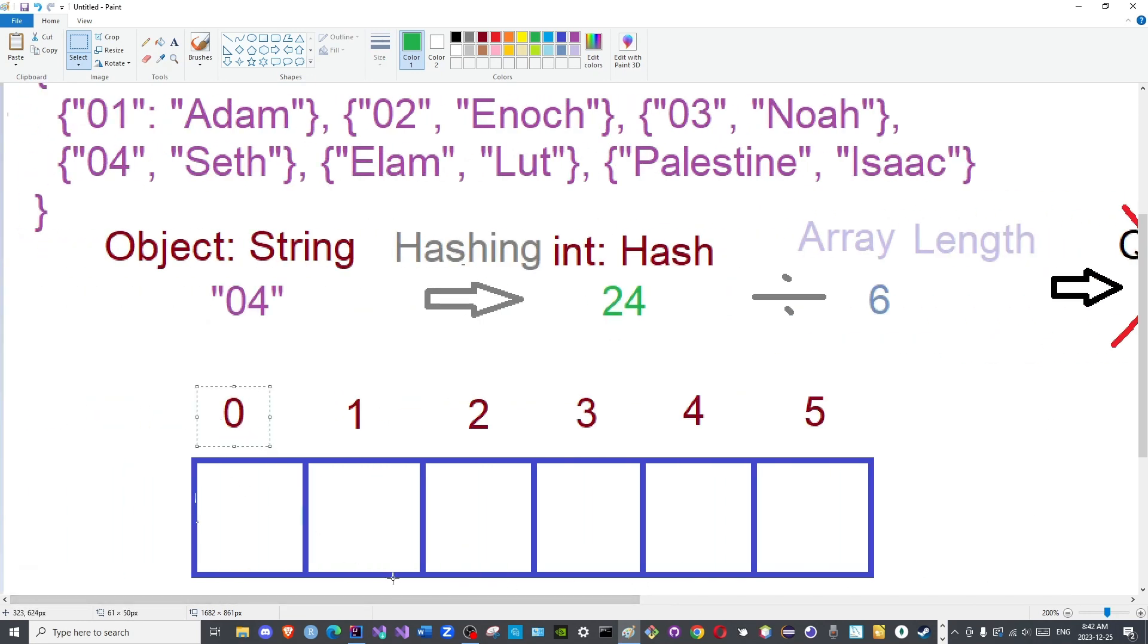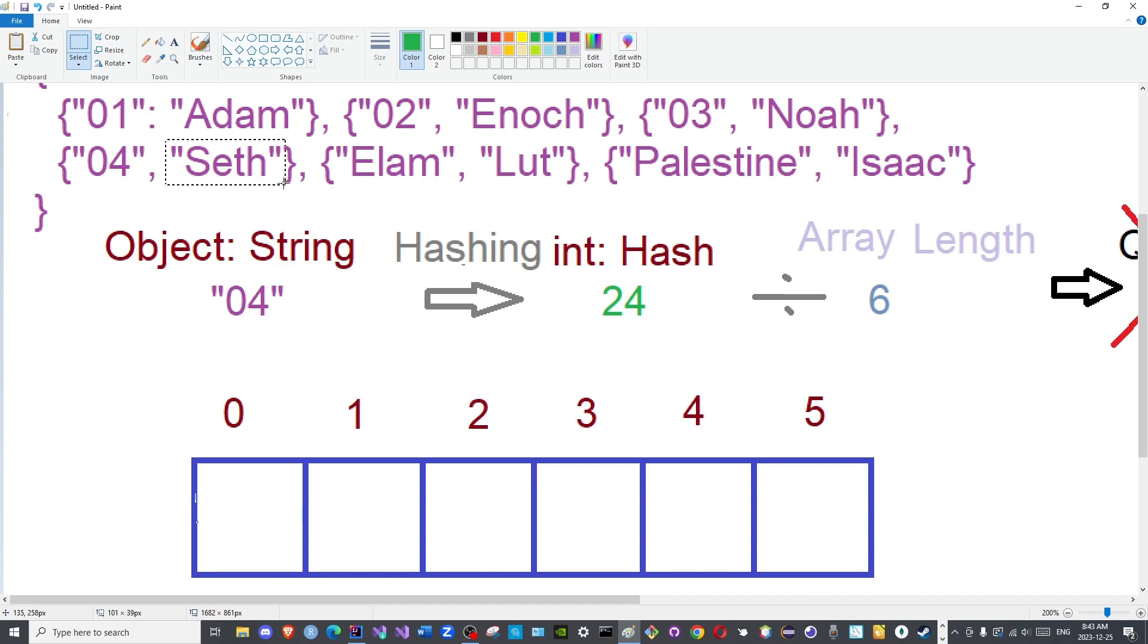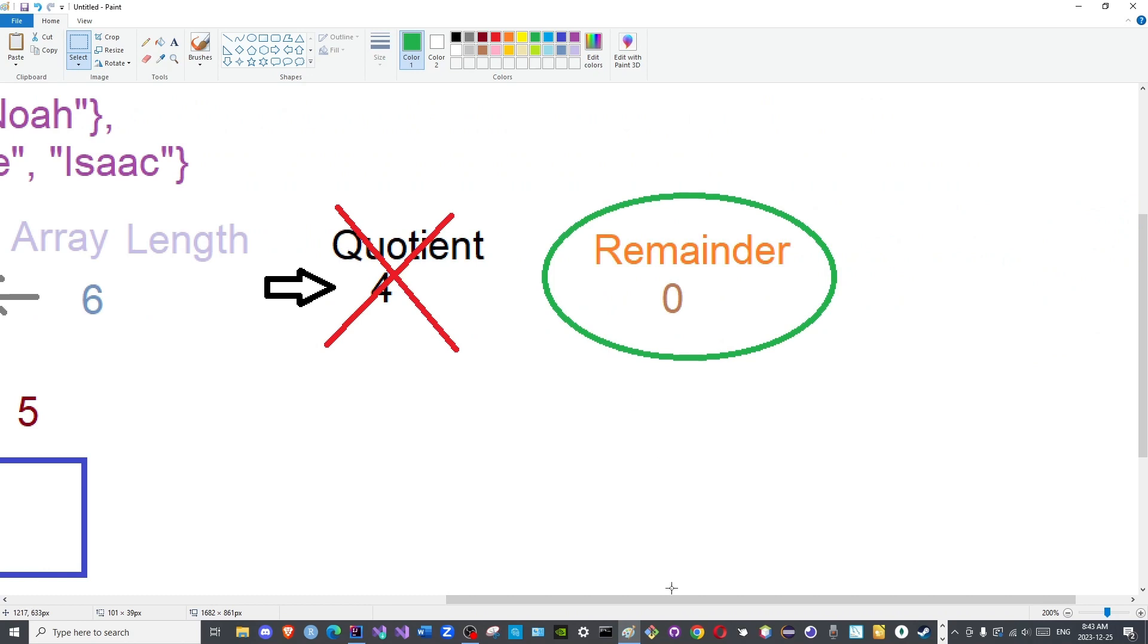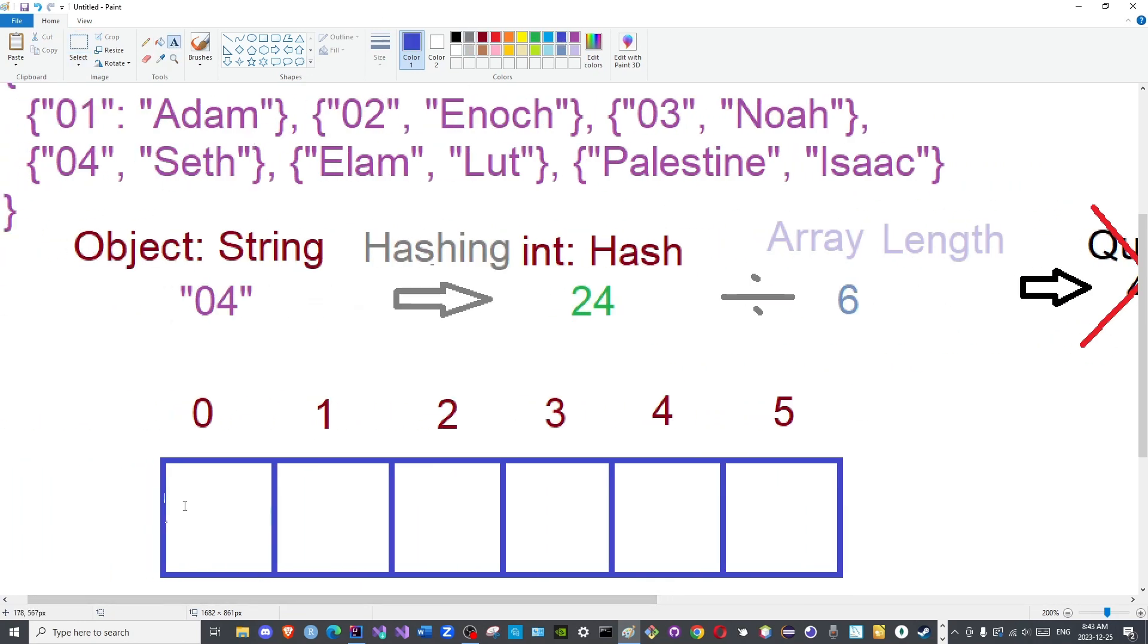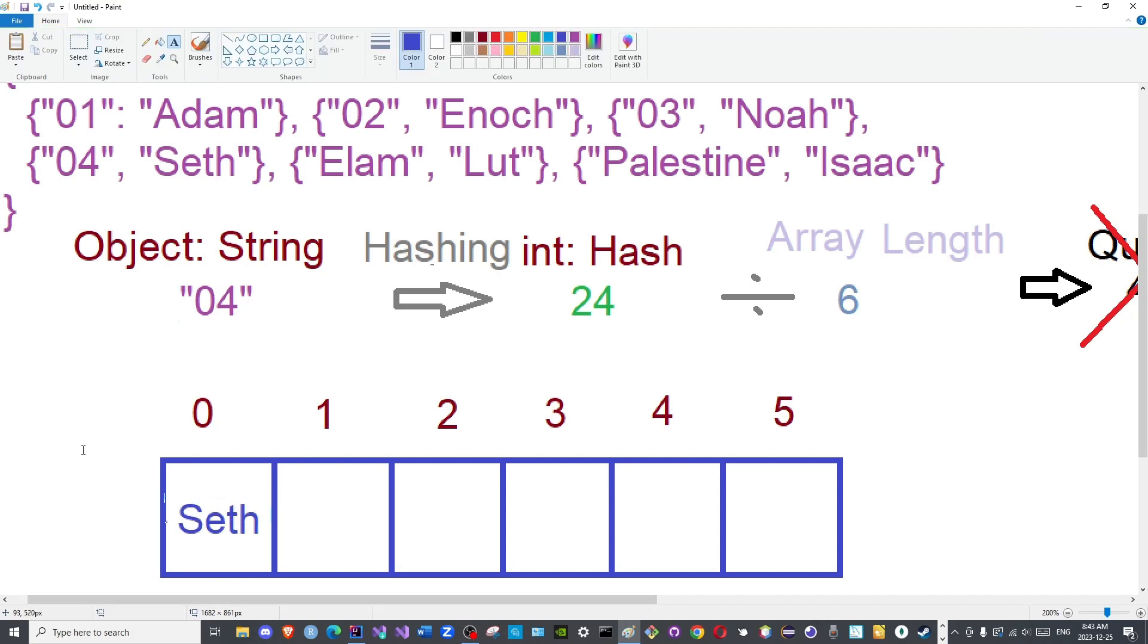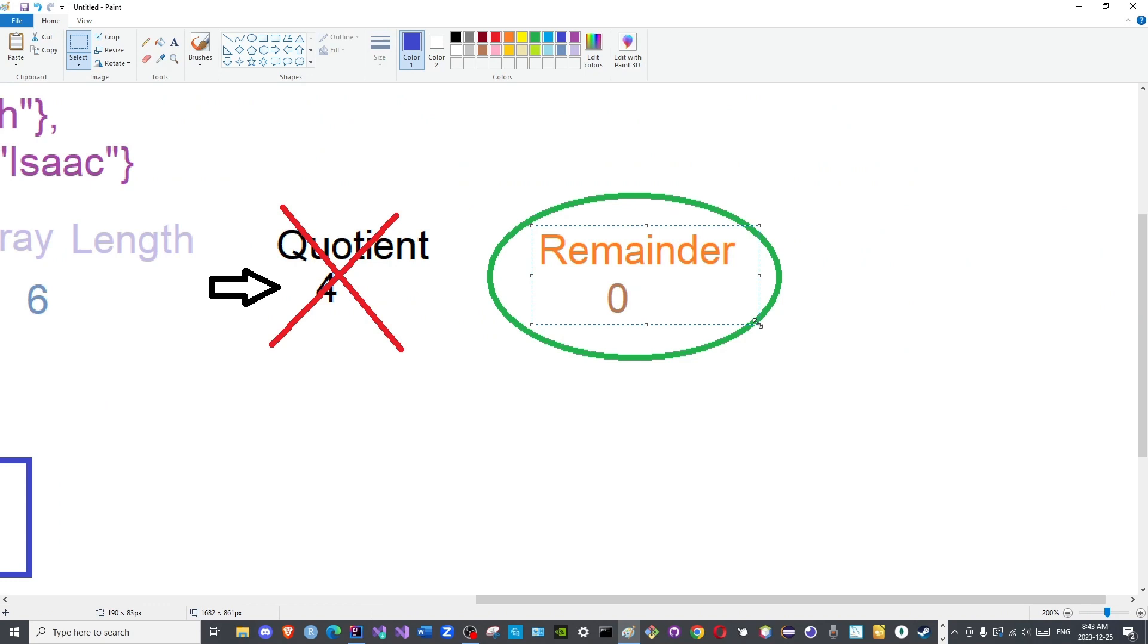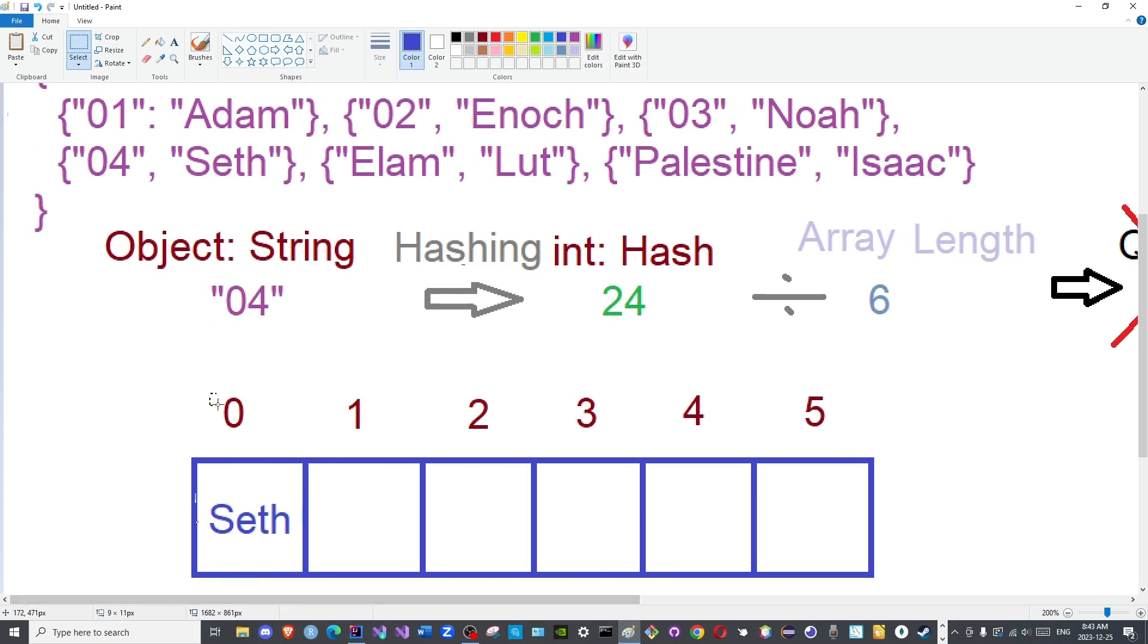So this remainder functions as the index at which this value or this element will be placed. So the name Seth will actually be placed here because of the remainder. So I will type Seth here without the double quotes to avoid consuming space. So how is the label being used here? It is being used through its hash. This hash is now connected to this remainder.